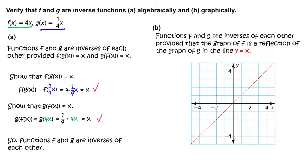Part b. Functions f and g are inverses of each other, provided that the graph of f is a reflection of the graph of g in the line y equals x. First, graph f of x equals 4x. Then, graph g of x equals 1 fourth x.